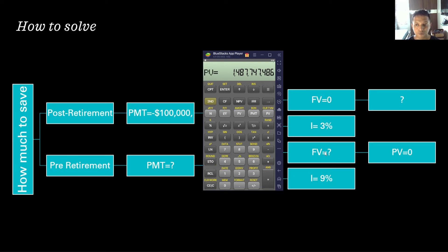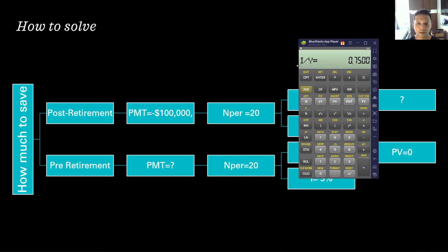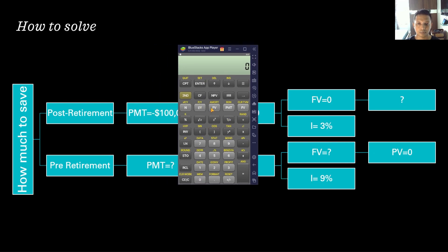The 1.487 million becomes the future value for the pre-retirement phase. Use the same value and select future value directly. I/Y is 9%, but since we're calculating monthly savings, divide 9 by 12 to get 0.75%, then press I/Y. N is 20 years converted to 240 months, so press 240 then N. PV is 0 since we start with no savings, so press 0 then PV.